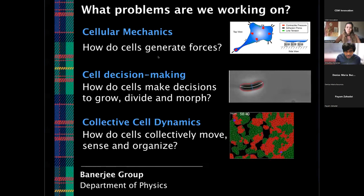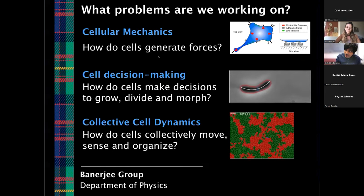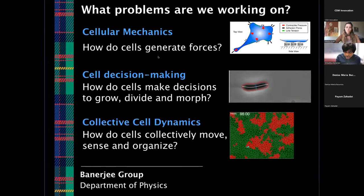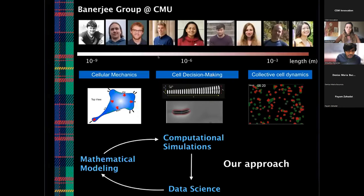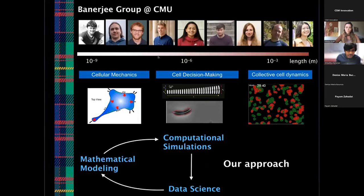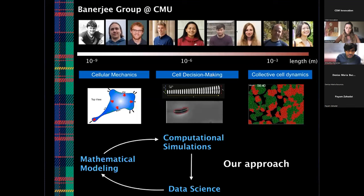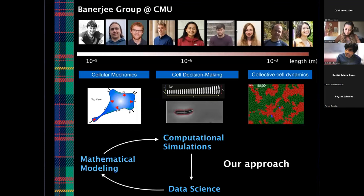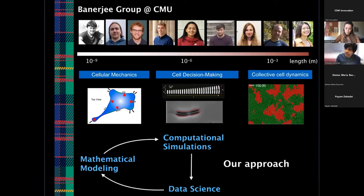This is a very complex problem. The real challenge in modeling the dynamics of such living systems is that it occurs on multiple scales — multiple length and time scales. I'm going to illustrate that with a movie from developmental biology. Most of the work here is done by amazing students and postdocs in my lab, who combine mathematical modeling, data science, and computational simulations. Using this three-pronged approach, we try to simulate how living systems evolve.